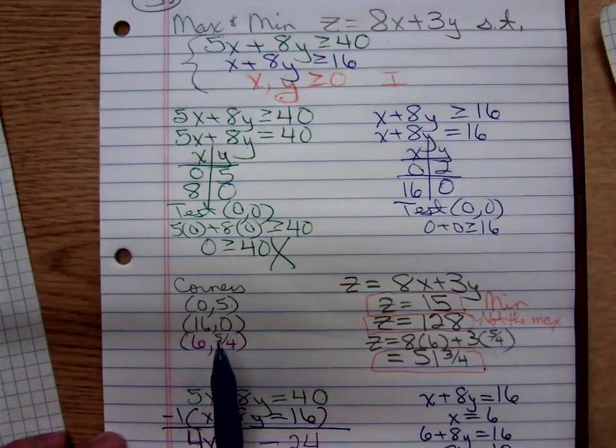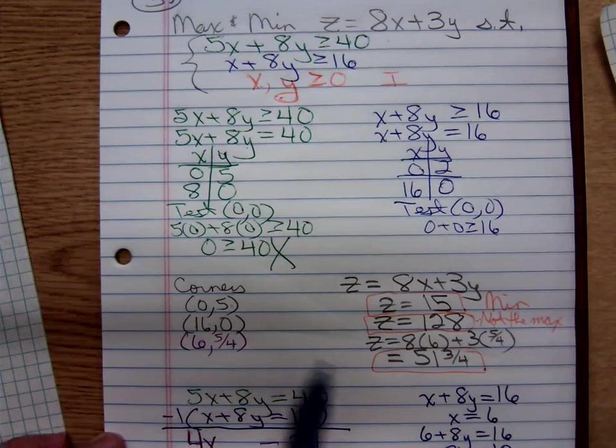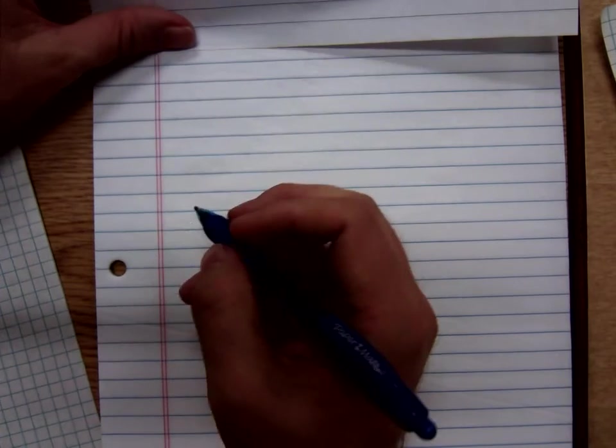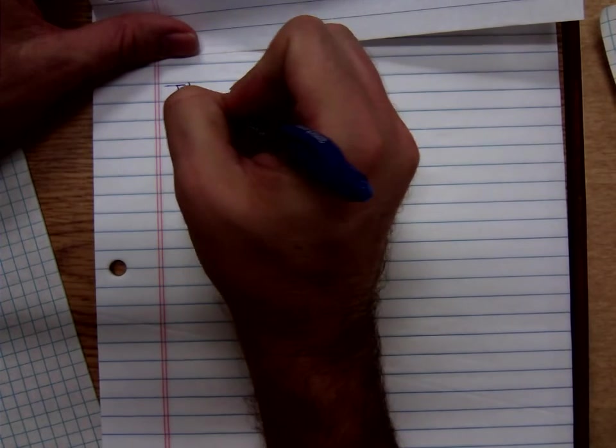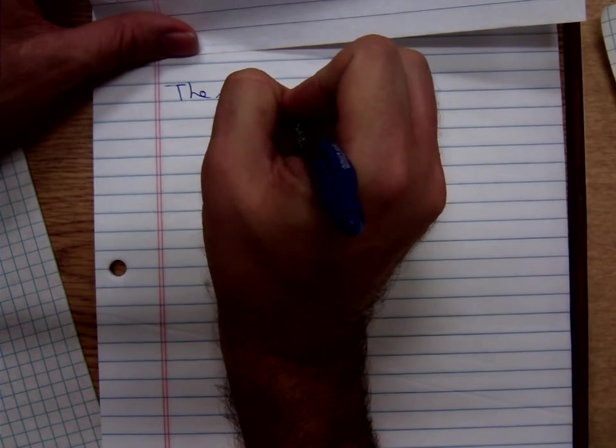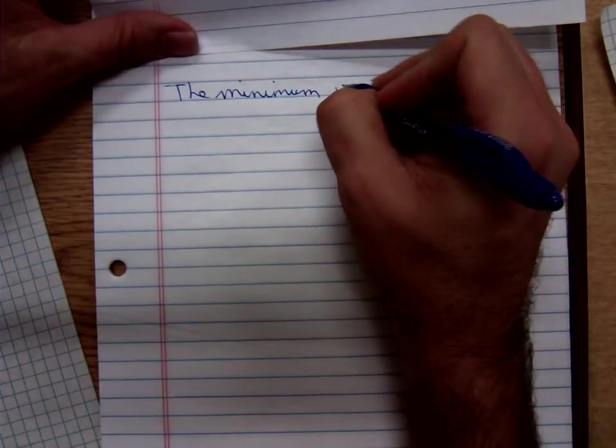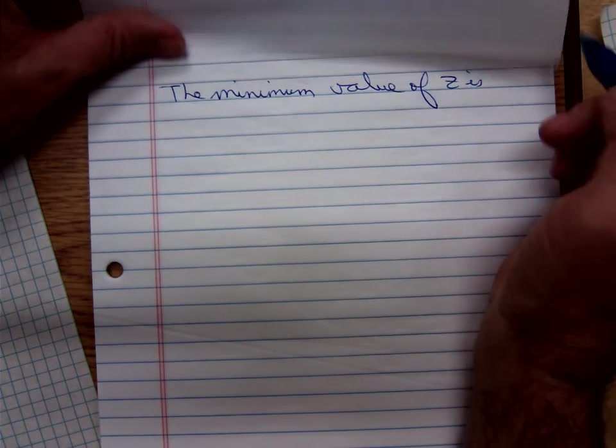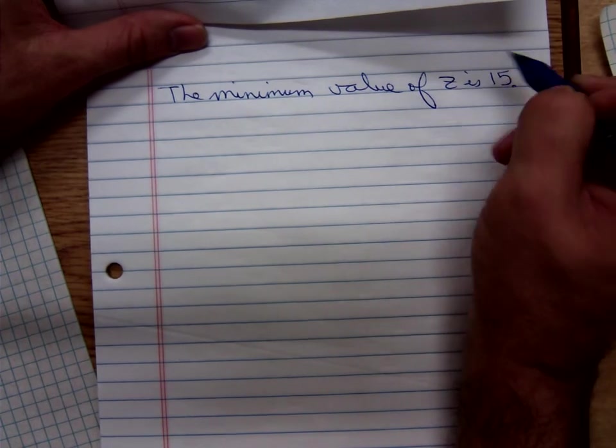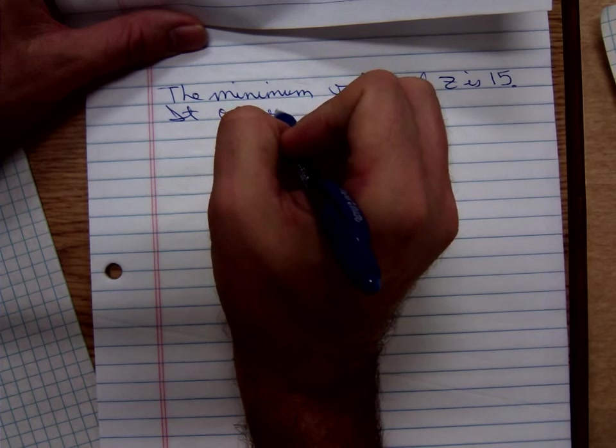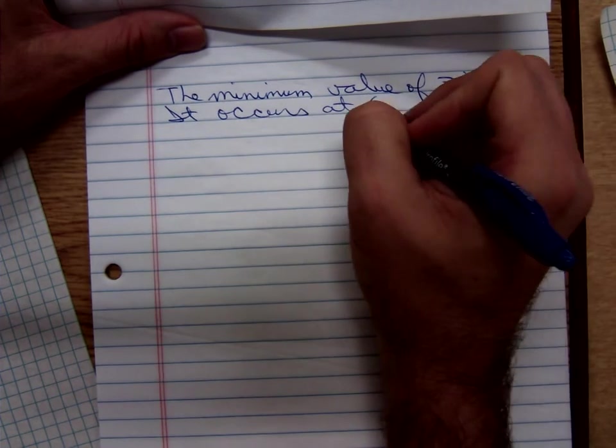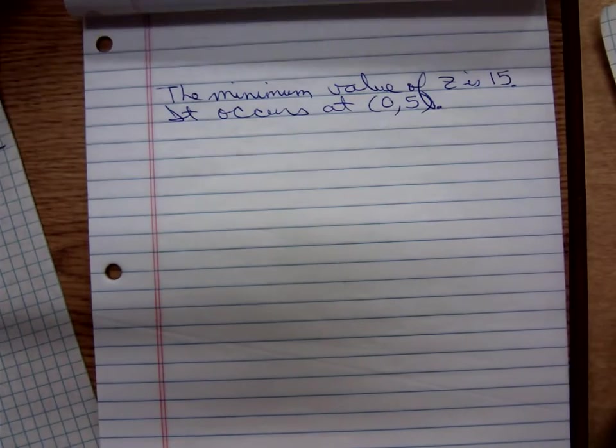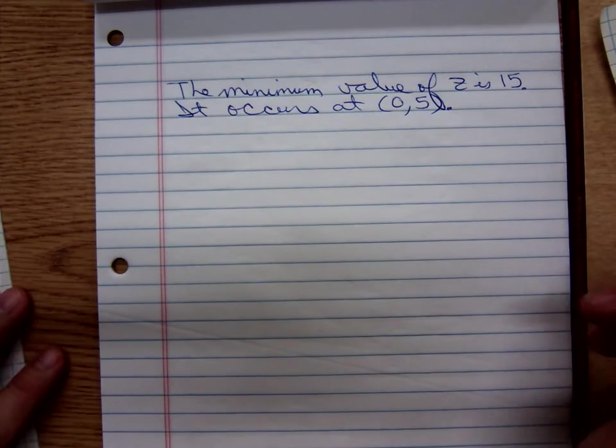All that work to get the 6, 5 fourths. And that wasn't even significant. So, I'll say the minimum value of Z is, what did I say, 15? It occurs at the ordered pair 0, 5. What did we say about the maximum value? There is no maximum value.